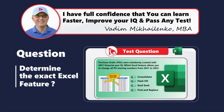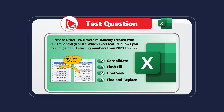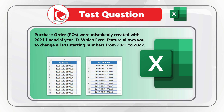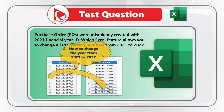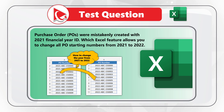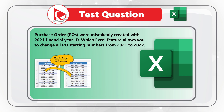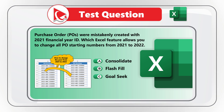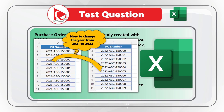Here's an amazing question to test your knowledge of Microsoft Excel features. Purchase orders (POs) were mistakenly created with the 2021 financial year ID. Which Excel feature allows you to change all purchase order starting numbers from 2021 to 2022? You have four choices: Choice A — Consolidate, Choice B — Flash Fill, Choice C — Goal Seek, and Choice D — Find and Replace. Take a close look at the purchase order numbers and see which feature you would choose.